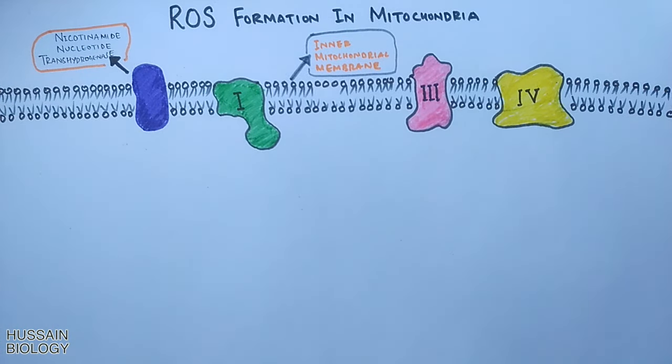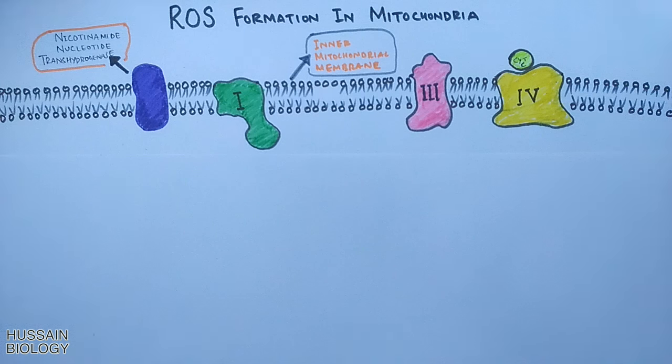Now let's see in detail how these ROS are generated in the mitochondria. During electron transport chain there is a flow of electrons within the inner mitochondrial membrane through complexes, and in between complex one and complex three there exists a Q cycle which receives the electrons and passes these electrons from complex one to complex three.